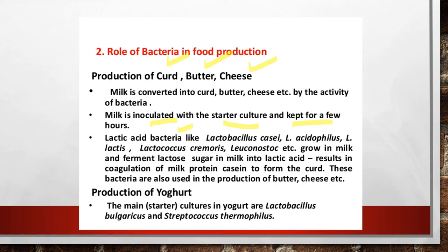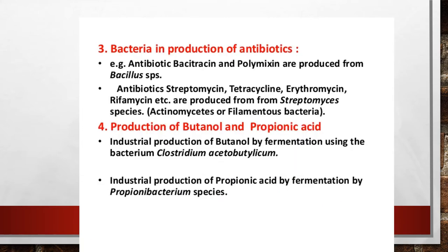These bacteria grow in milk and ferment the lactose sugar, forming lactic acid. This results in the coagulation of the milk protein casein, and finally there is a formation of curd — what you call curdling of milk. These bacteria are also used in the formation of butter and cheese. For yogurt production, the main bacterial cultures are Lactobacillus bulgaricus and Streptococcus thermophilus.